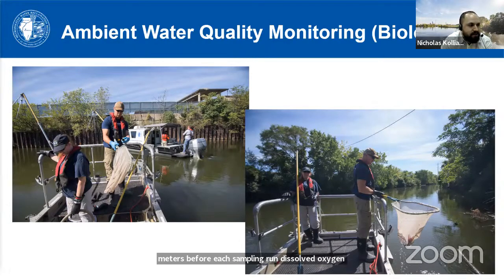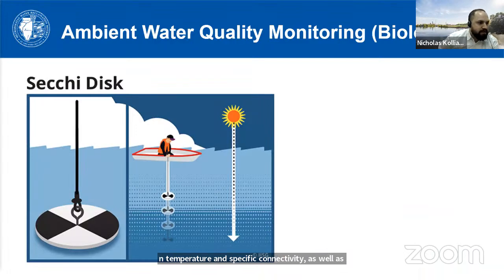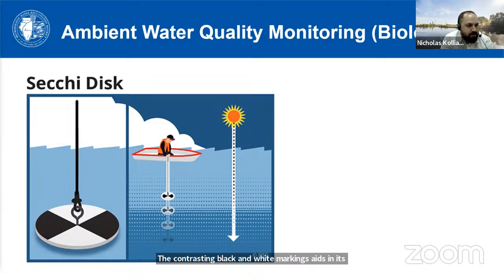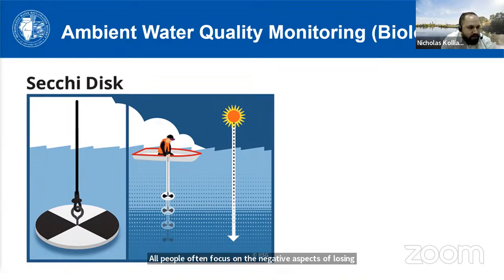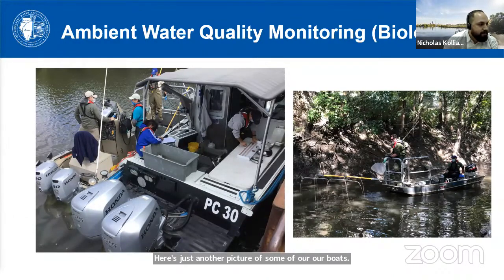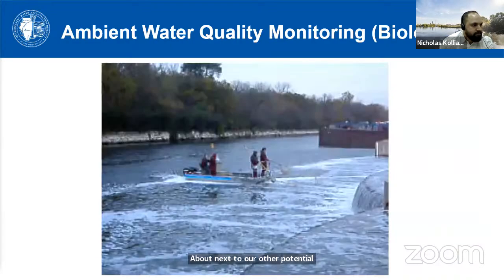The next project I'd like to discuss is our continuous dissolved oxygen monitoring program. The continuous dissolved oxygen monitoring program, or CDOM, provides hourly water quality data throughout the year and fulfills NPDES permit requirements in the O'Brien and Calumet water reclamation plant permits. The data includes hourly dissolved oxygen, temperature, and specific conductance. Monitoring locations are within the deep draft and navigable waterways throughout the metropolitan Chicago area. There are currently 20 active monitoring stations.